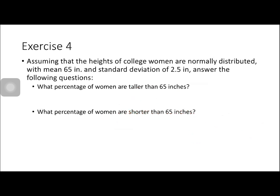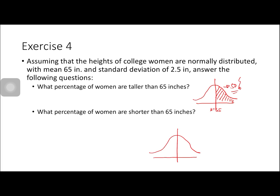Another example: Assuming that the heights of college women are normally distributed with a mean of 65 inches and standard deviation of 2.5 inches. What percentage of women are taller than 65 inches? Since 65 is the mean, the area to the right of the mean is 50%. What percentage of women are shorter than 65 inches? That is also 50%, since the normal curve is symmetric.